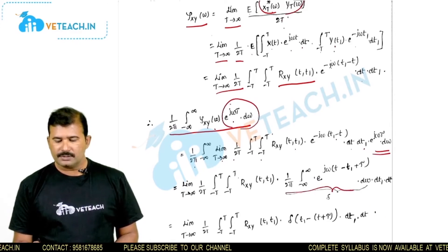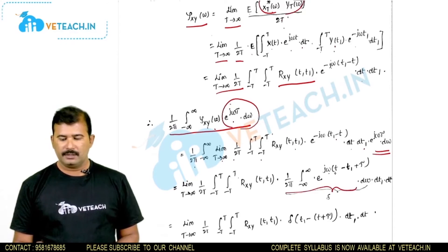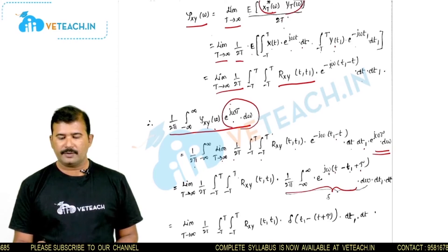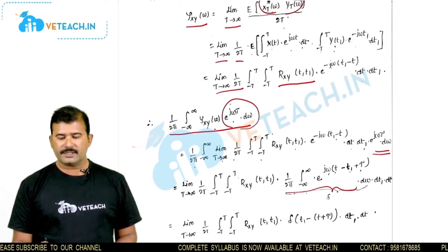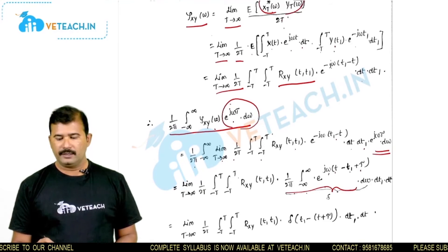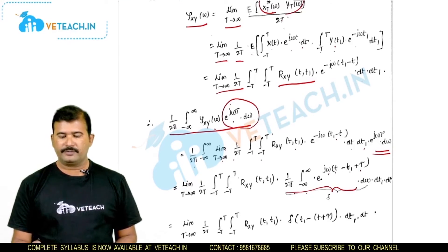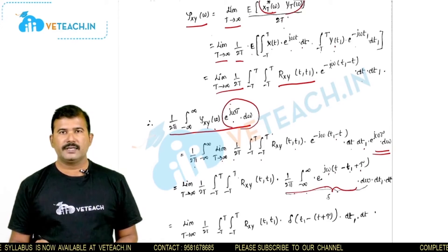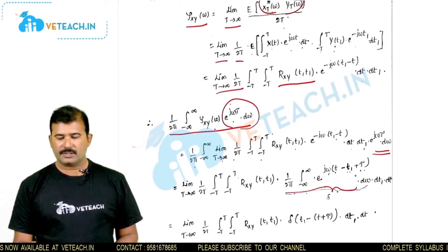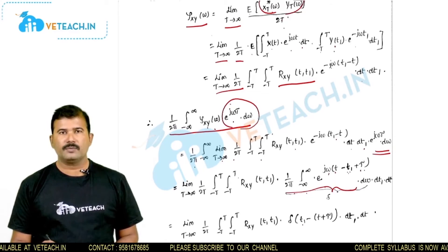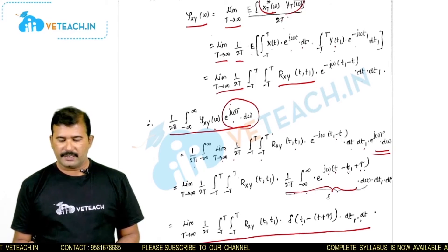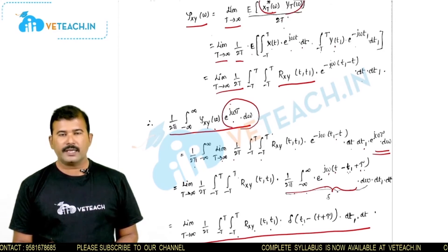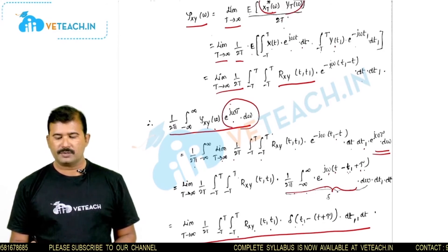Collecting all exponential functions together gives e^(jω(τ − t₁ + t)). The integral 1/2π times the integral of e^(jω(t − t₁ + τ)} dω is recognized as a delta function δ(t − t₁ + τ), which equals δ(t₁ − t − τ) since δ(−t) = δ(t). The remaining expression is: limit T→∞ of 1/2T times the integral from −T to T of R_xy(t, t₁) · δ(t₁ − (t + τ)) dt₁ dt.